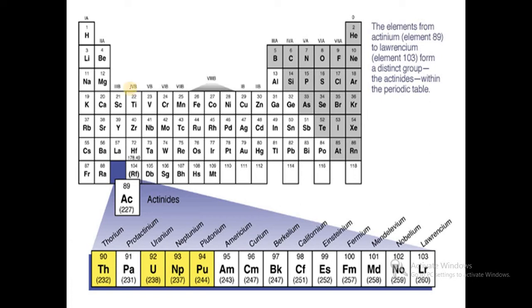So here actinide series: First element is actinium, atomic number 89. Then there is thorium, protactinium, uranium, neptunium, plutonium, americium.